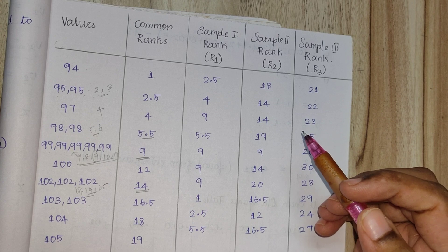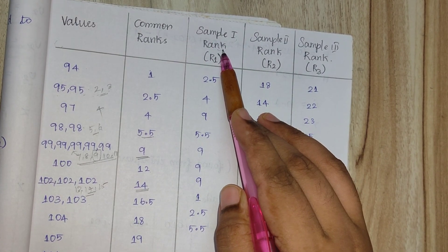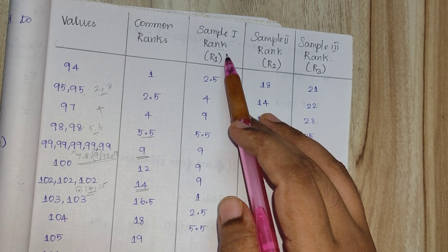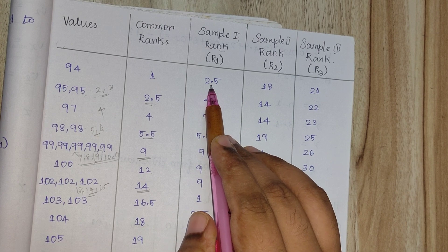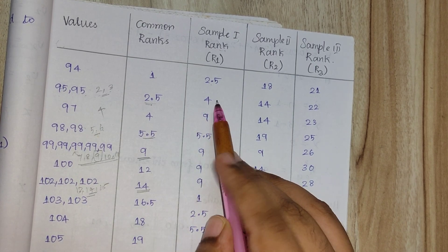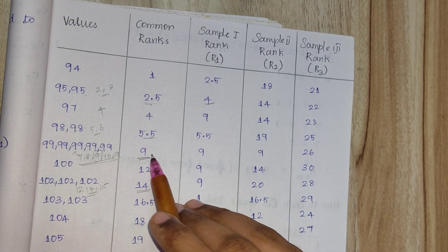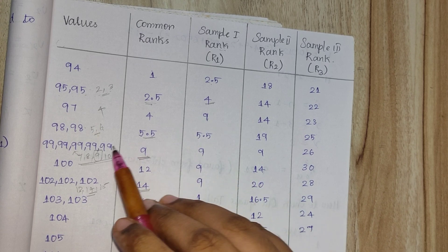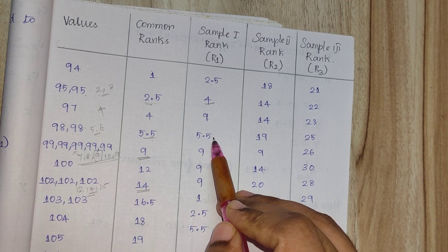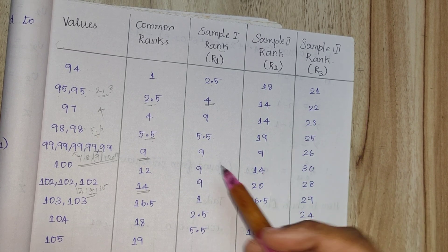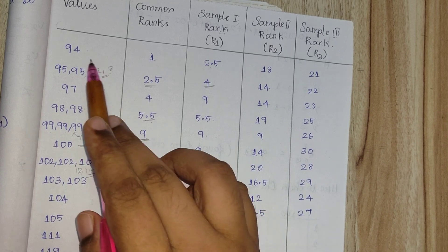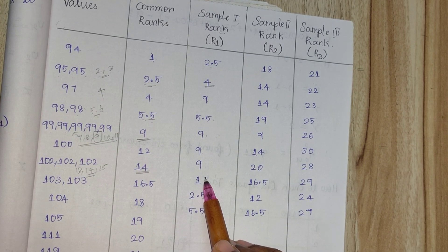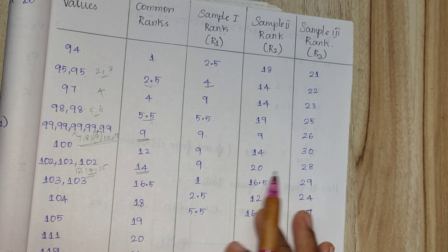Next, we assign corresponding ranks to each sample. For Sample 1, the first value is 95, which has rank 2.5. The next value is 97, which has rank 4. Then 99, which has rank 9, appears three times in Sample 1, so we note 9, 9, 9. Then 98, which has rank 5.5. And 95 again with rank 2.5, and 98 again with rank 5.5.